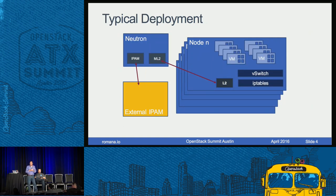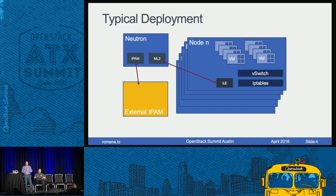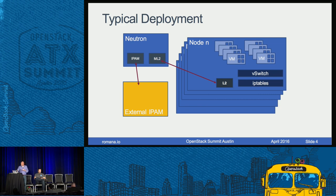A typical deployment looks something like this: you have your standard ML2 driver and the existing default IPAM pluggable driver in Neutron. If there's no external IPAM, it all behaves just as it did before — self-contained to Neutron. But if you choose to customize that pluggable IPAM driver, it will fetch an IP address from some external system defined in the driver itself. That's how a pluggable IPAM system is deployed into Neutron.